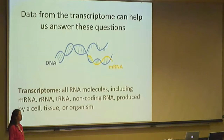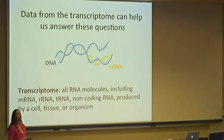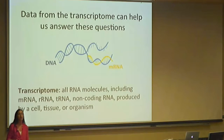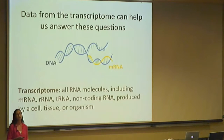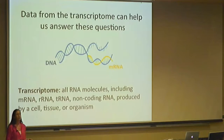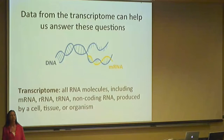The transcriptome is basically all of the RNA molecules — your messenger RNA, tRNA, ribosomal RNA — that are produced by a cell or a tissue at any given time. And this can change, so it's dynamic. We may have genes that are transcribed or expressed throughout life, genes that are only expressed during specific developmental phases, or when an organism is under stress from its environment.